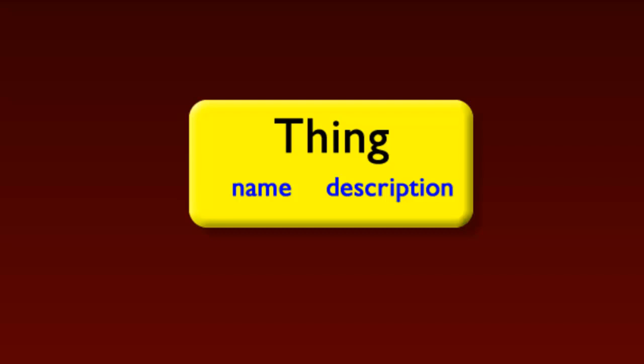In Ruby, you might have a Thing class that has a name and a description. I can create from the Thing class any number of individual Thing objects, each of which has its own name and description.